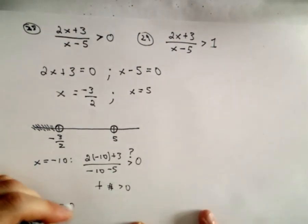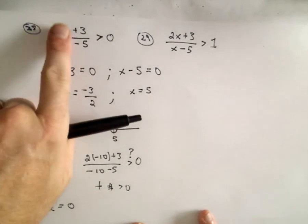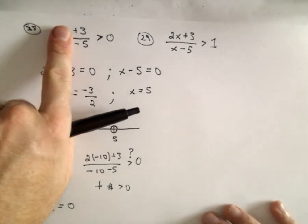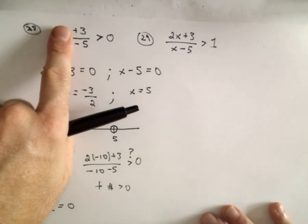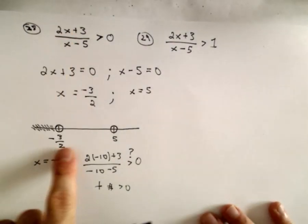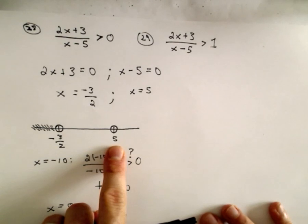If we plug in x equals 0, we'll just be left with 3 over negative 5, which is going to give us negative 3 fifths. That's definitely not greater than 0. So no number between negative 3 halves and 5 will work.